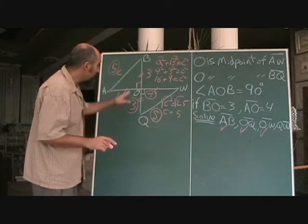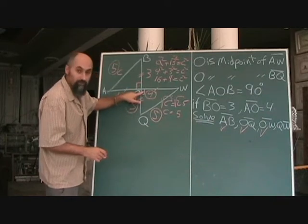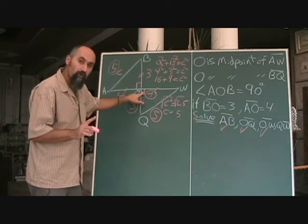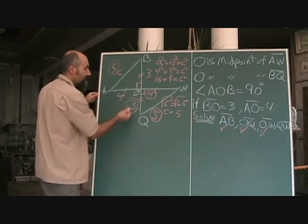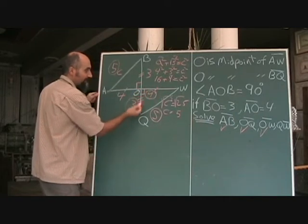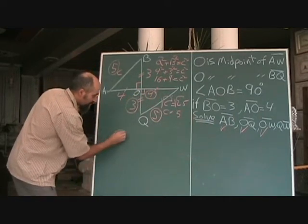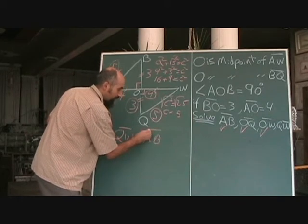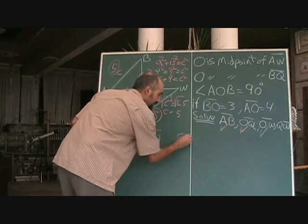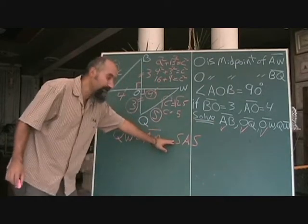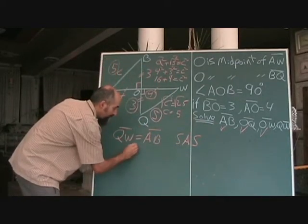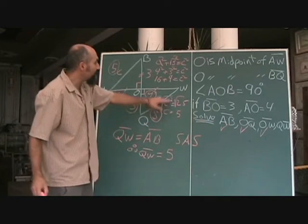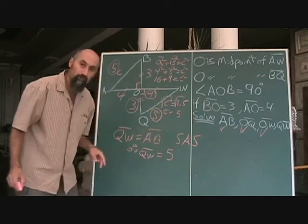The other way we can do this is use the vertically opposite relationship and say, yes, this is 90 degrees as well. Then what we have is congruent triangles because we have side angle side here and this is side angle side. So what you could say is QW is equal to AB because of side angle side. And that's a legitimate answer. Therefore, QW is equal to 5. So you wouldn't have to go through all these calculations if you knew your congruent triangles.